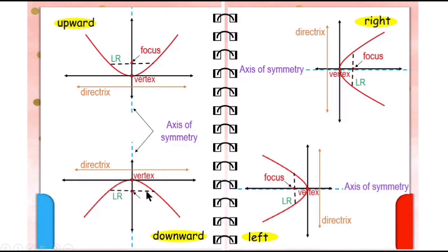But if the opening of the parabola is either right or left, the direction of the latus rectum is vertical. The focus is inside the parabola. If the parabola opens upward, the focus is above the vertex. If the parabola opens downward, the focus is below the vertex. If it opens to the right, the focus is also located to the right of the vertex.